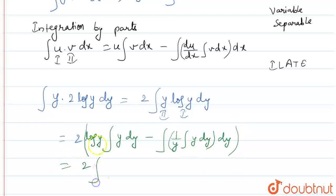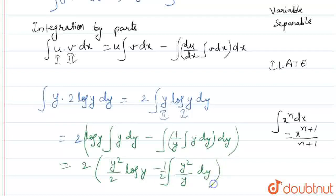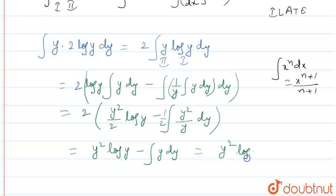Then we can write 2 log y multiplied by y²/2. Using the integral of x to the power n dx equals x to the power n+1 divided by n+1, we have 2 into y²/2 times log y, minus the integral of y²/2 times 1/y dy. Further simplifying: y² log y minus y²/2 plus some constant, giving us y² log y minus y²/2 plus constant.